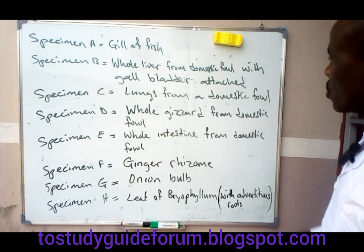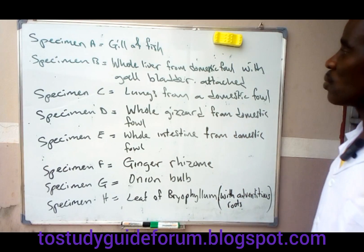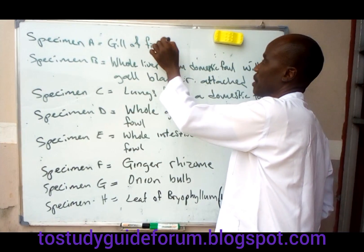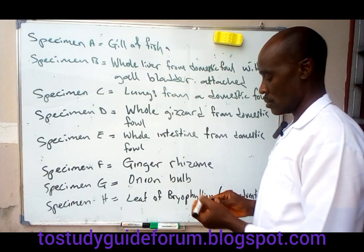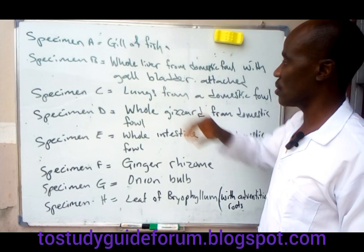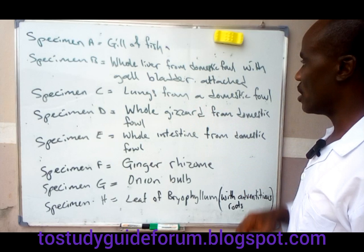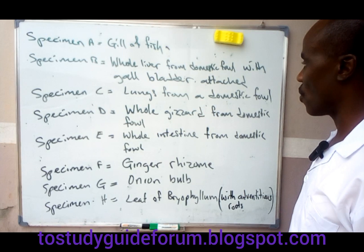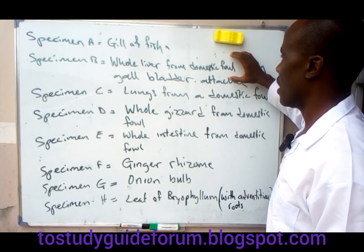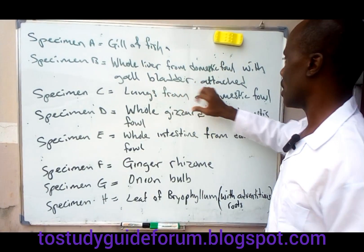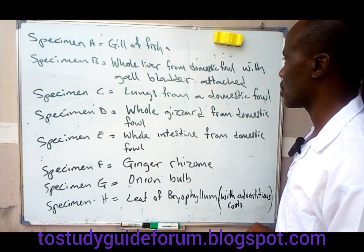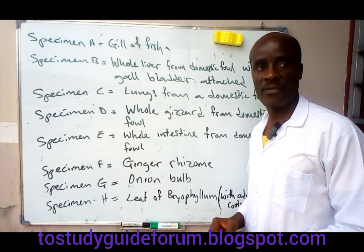Now let's quickly look at what we have. Specimen A — the fish — is for respiration. The lungs, Specimen C, is also for respiration. And for the liver with the gallbladder attached, Specimen B, the liver plays a very important role.